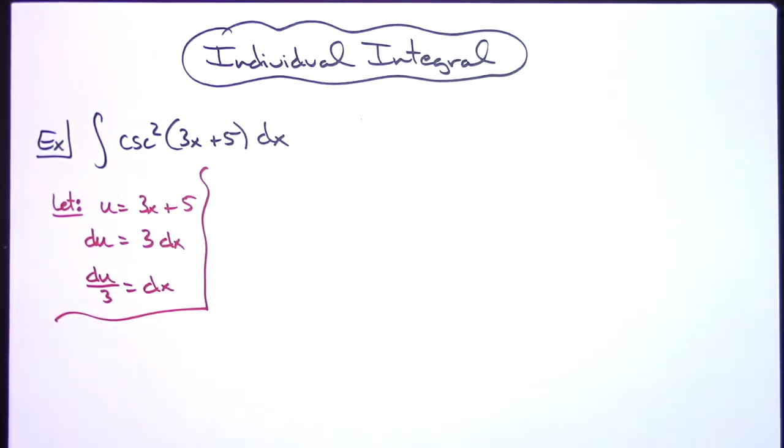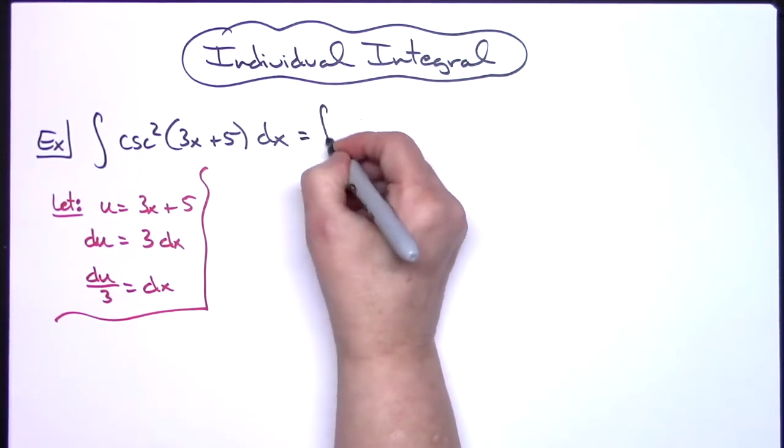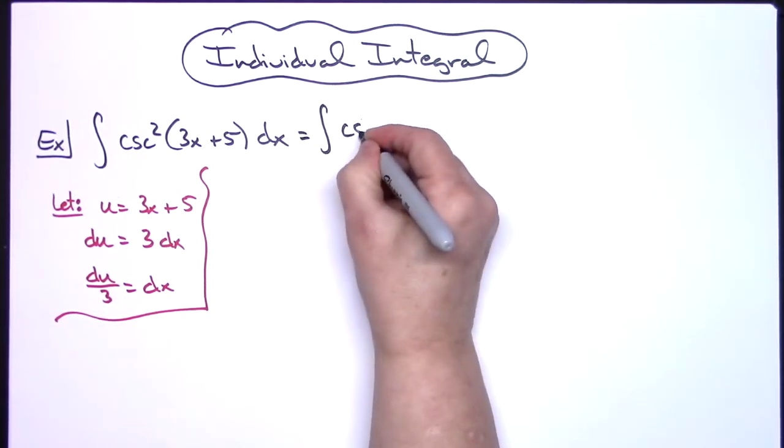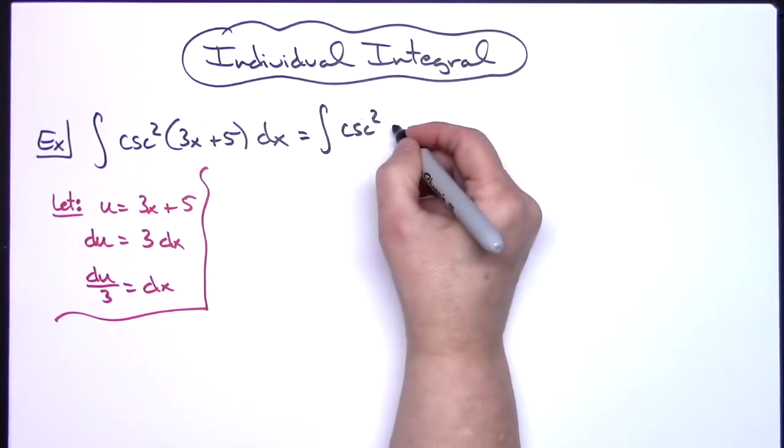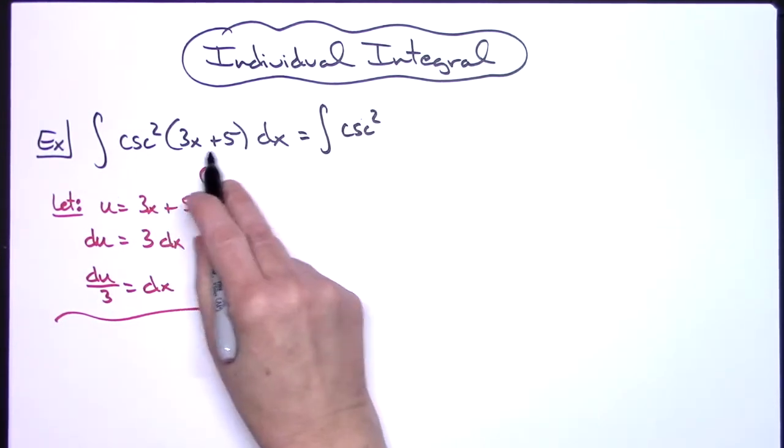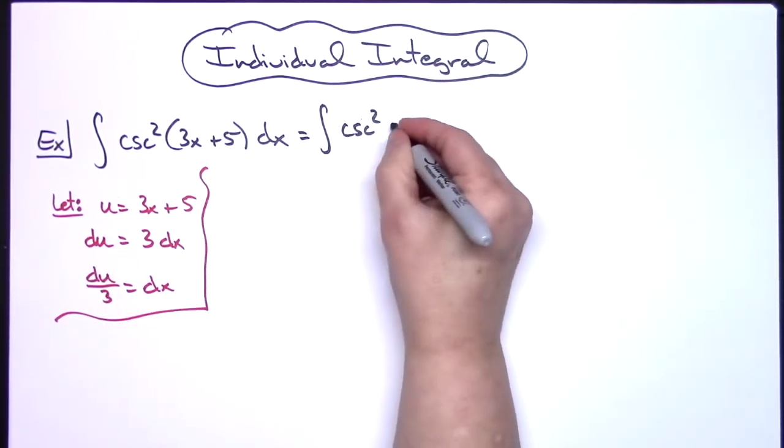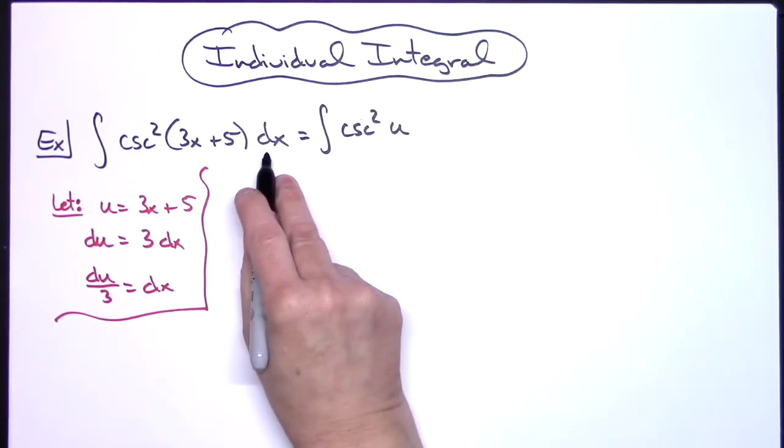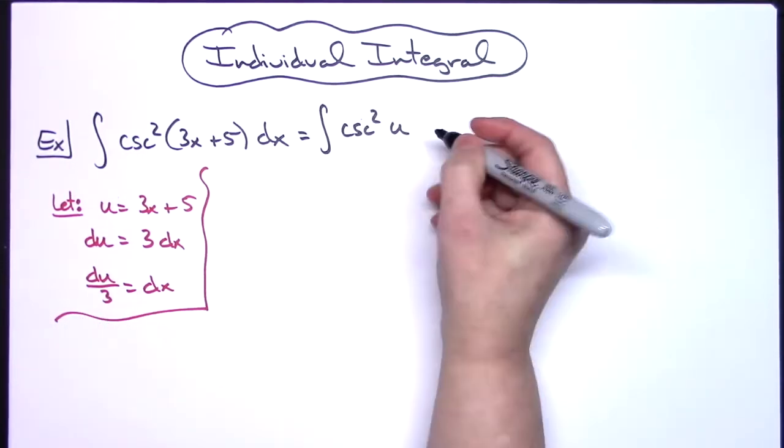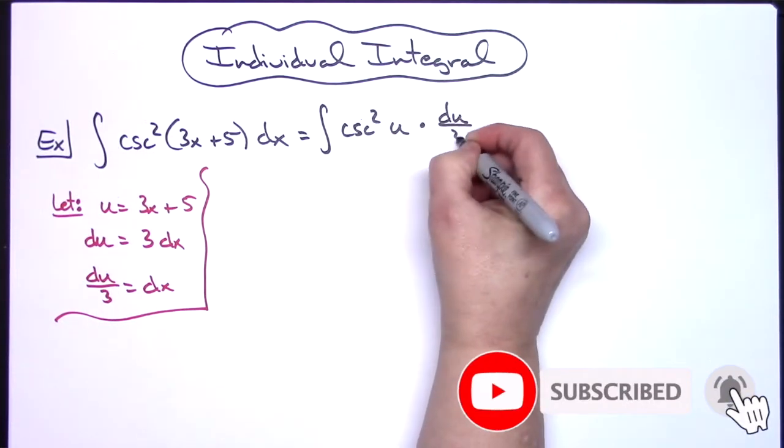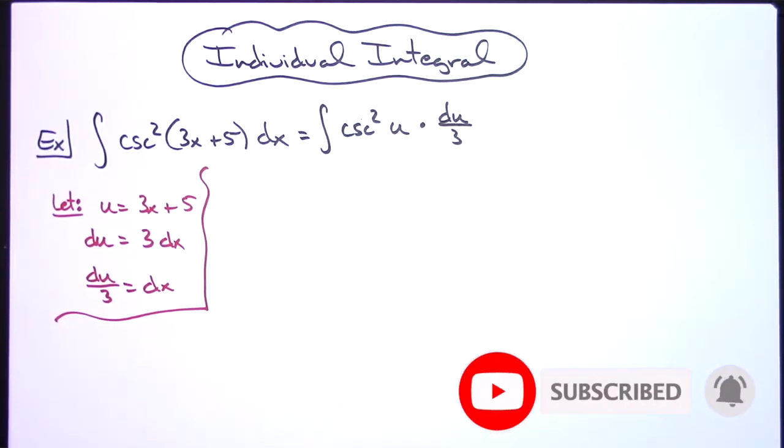I'm going to come back up here to my original integral and start making some substitutions. The cosecant squared is going to stay put. I'm going to replace the 3x + 5 with u, and I'm going to replace dx with du/3.